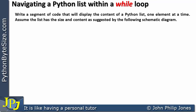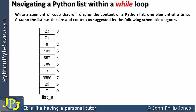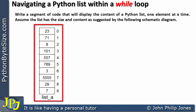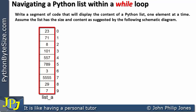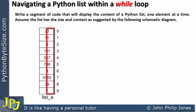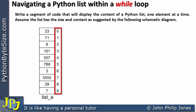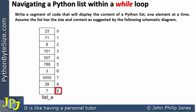Assume the list has the size and content as suggested by the following schematic diagram. Here we can see the representation of a list schematically, and we can see that it has 10 elements with specific contents. The index goes from 0 through to 9, whereas the 10th element has the index value of 9 because we always start at 0. And here we can see the name of the list.